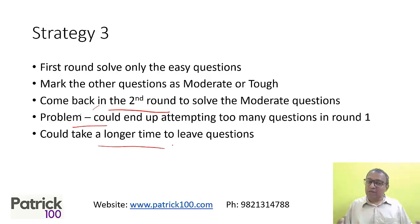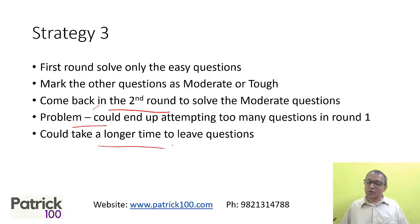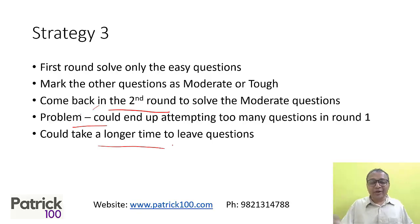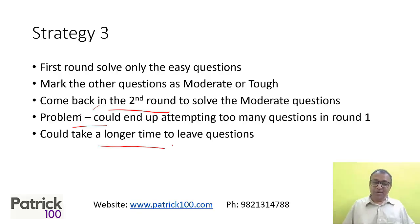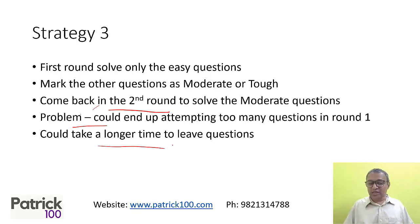Technically, strategy three is good for people who are solving a moderate number of questions — around eight to ten questions. It works well when you try to go through the paper and solve questions as and when they come. But if you find yourself unable to leave questions quickly or wasting too much time on some questions, go back to the first or second strategy.